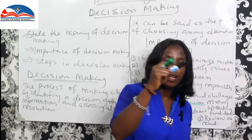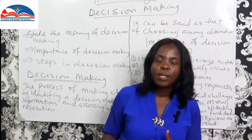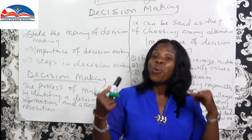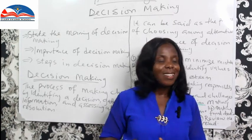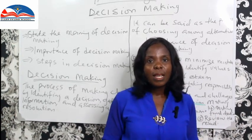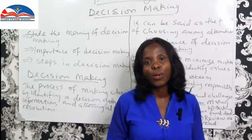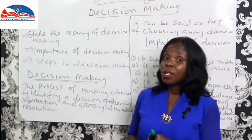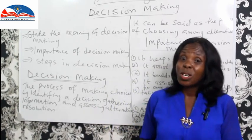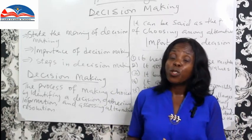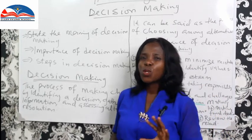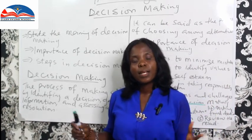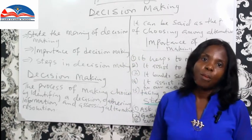Step five: review the results. After making your final decision, review the results that come out of it. It's a practical course — home management helps you navigate the home, your personal life, and even your business. Remember: identify alternatives, gather information, process and evaluate, pick your option, make your final decision, and then review what you have chosen to ensure it was the right thing.